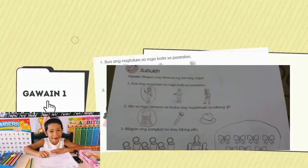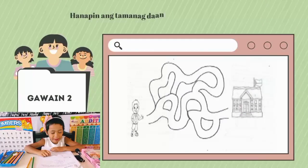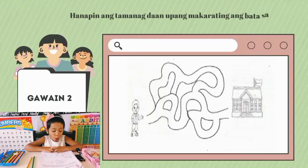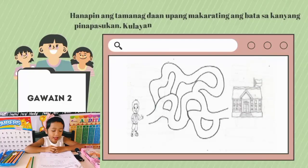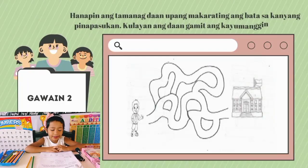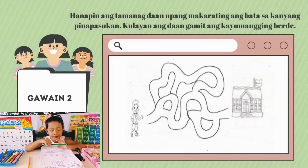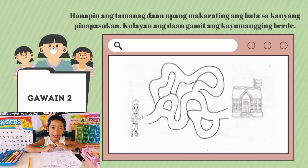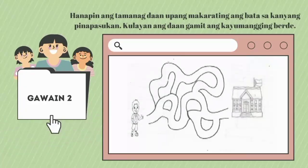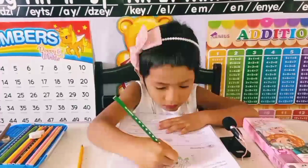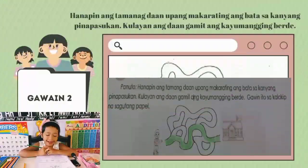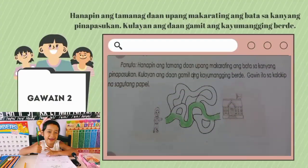Sunod na gawain: hanapin ang tamang daan upang makarating ang bata sa kanyang pinapasukan. Tulayan ang daan gamit ang kayumanging verde. Tara, tulungan natin ang bata makarating sa paaralan. Nakarating na ang bata sa paaralan.